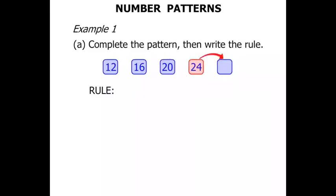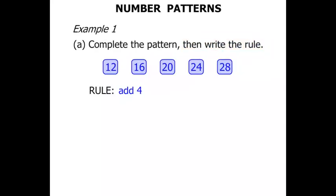From 24, if we add 4, we get 28. So we've completed the pattern, now we need to write the rule. Quite simply, we were adding 4, so let's write as the rule: add 4. Terrific!